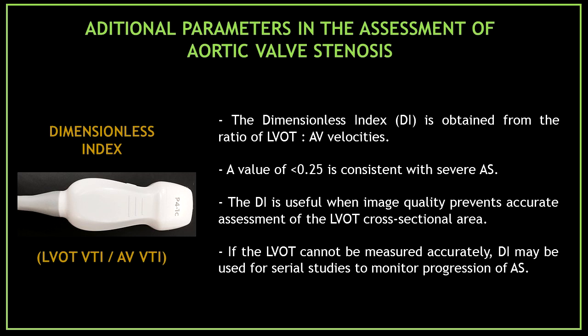Another additional parameter is the dimensionless index, obtained from the ratio of the left ventricular outflow tract and aortic valve velocities. A value of less than 0.25 is consistent with severe aortic stenosis. The dimensionless index is useful when image quality prevents accurate assessment of the LVOT cross-sectional area, and may be used for serial studies to monitor progression of aortic stenosis if the LVOT cannot be measured accurately.